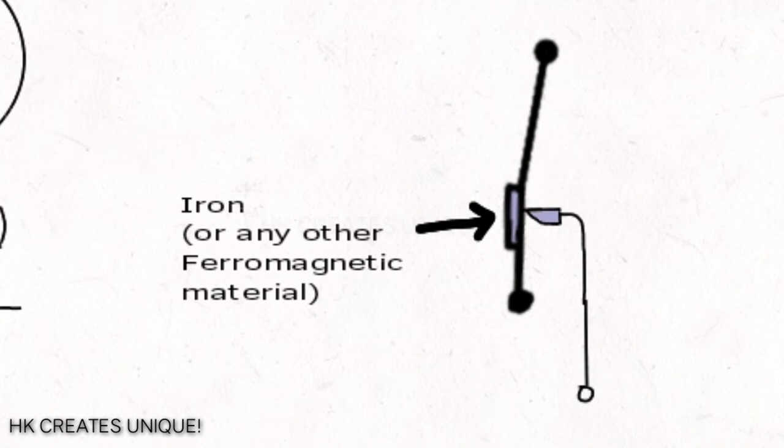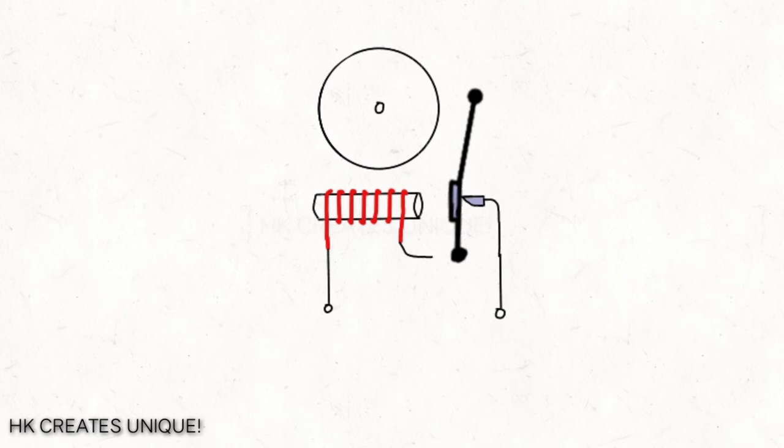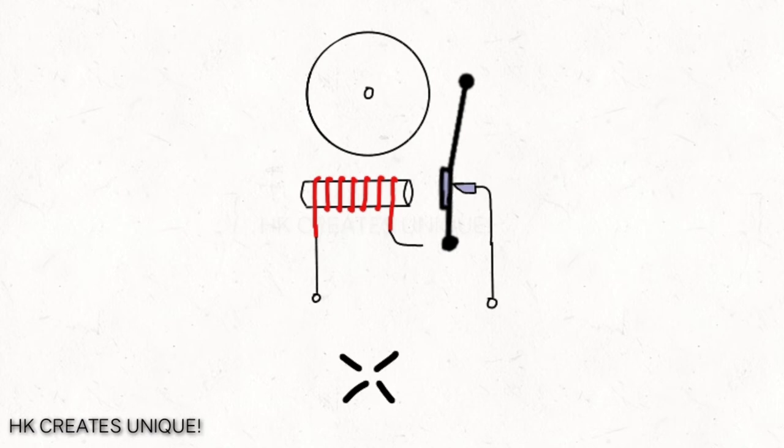It is a ferromagnetic material like iron for magnetic attraction. Near the iron, an electromagnet is added. Note that the electromagnet and the metal contact are stationary. Now when the electromagnet is connected to a power supply, it behaves like a bar magnet and pulls the striker.